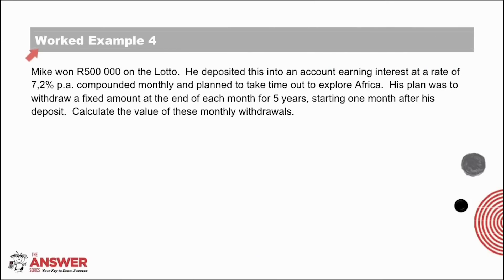In example 4, we have a similar situation to example 2 in that it is not a loan. Mike won R500,000 on the lotto. He deposited this into an account earning interest at 7.2% per annum compounded monthly and planned to take time out to explore Africa. His plan was to withdraw a fixed amount at the end of each month for 5 years, starting one month after his deposit. Calculate the value of these monthly withdrawals. See if you can identify which values go where in the formula and pause the video to give it a try.